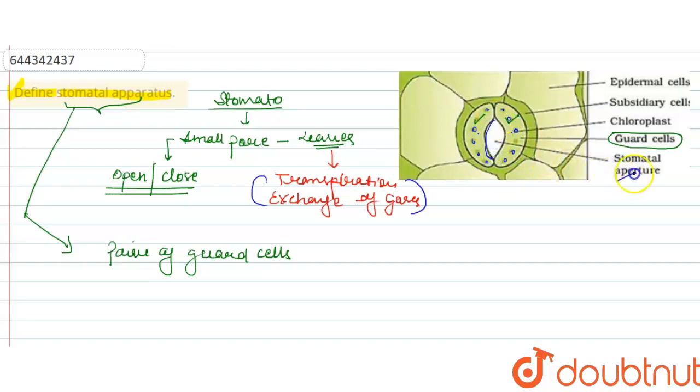And these are the subsidiary cells. And these outer cells which surround the subsidiary cells, these cells are known as epidermal cells. This is a very important structure in our plants for the photosynthesis process.